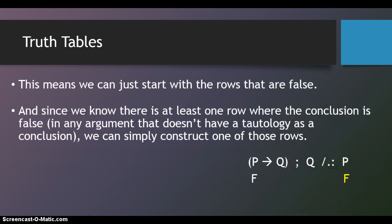This means that we can just start with the rows that are false. And since we know that there's at least one row where the conclusion is false, in any argument that doesn't have a tautology as a conclusion, we can simply construct one of those rows. So, we stipulate that P is false.